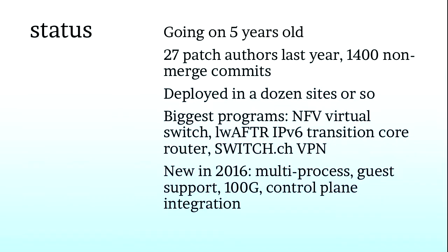The project is about five years old. Last year there were 27 patch authors. As far as I know, it's deployed in about a dozen sites. The biggest dataplanes we have are a virtual switch which is kind of like Open vSwitch running just in user space called the NFV, a core router for an IPv6 transition technology called Lightweight 4-over-6 (the Lightweight AFTR), a VPN running at switch.ch which is the academic network in Switzerland. New work over the last year includes multiprocess coordination to combine a control plane with a data plane, support for running Snabb as a guest in a virtualized system, and integration with control plane stuff.